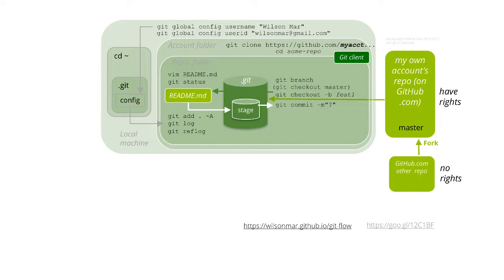Git reflog lists actions that have occurred on the local machine. Before pushing to GitHub, some prefer to rebase to squash some commits so that only one commit message appears for several commits made.